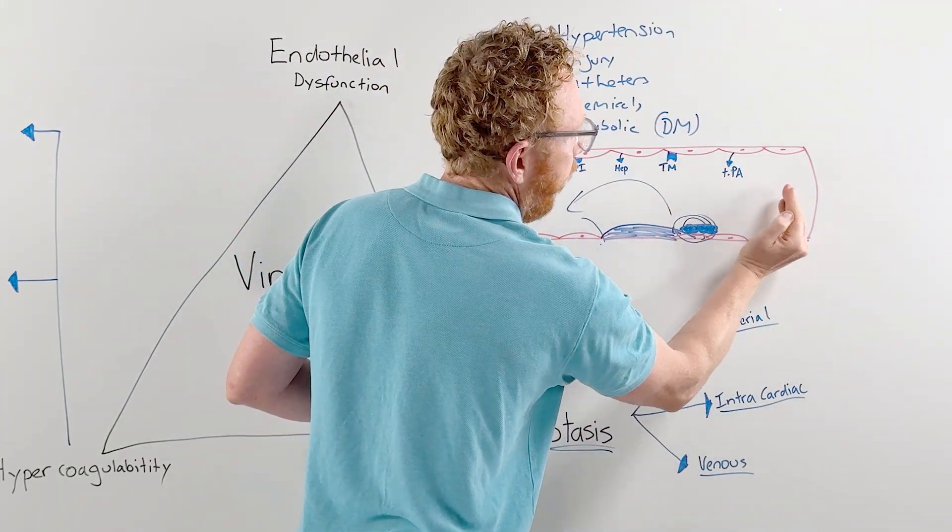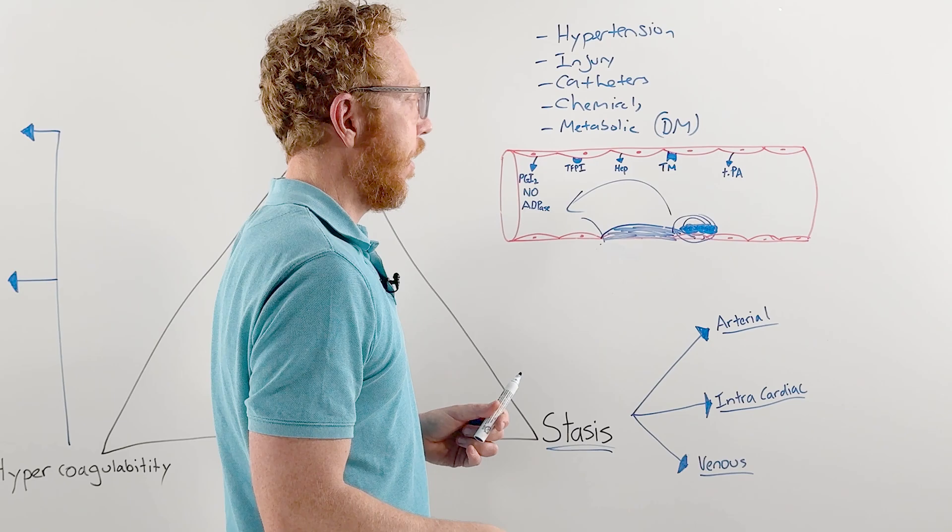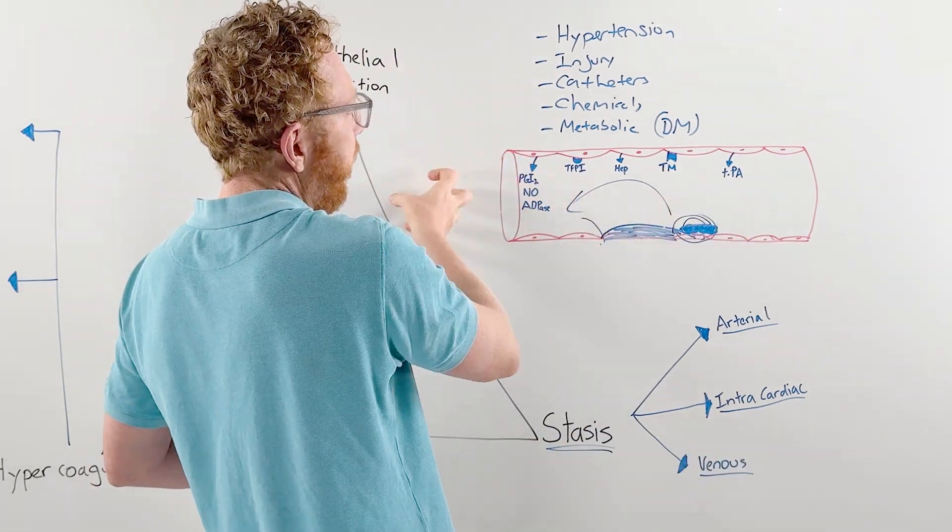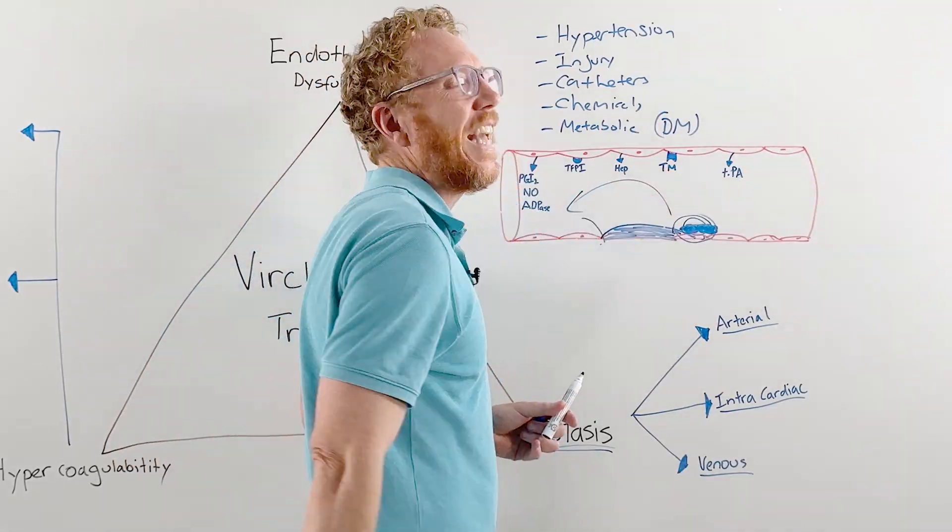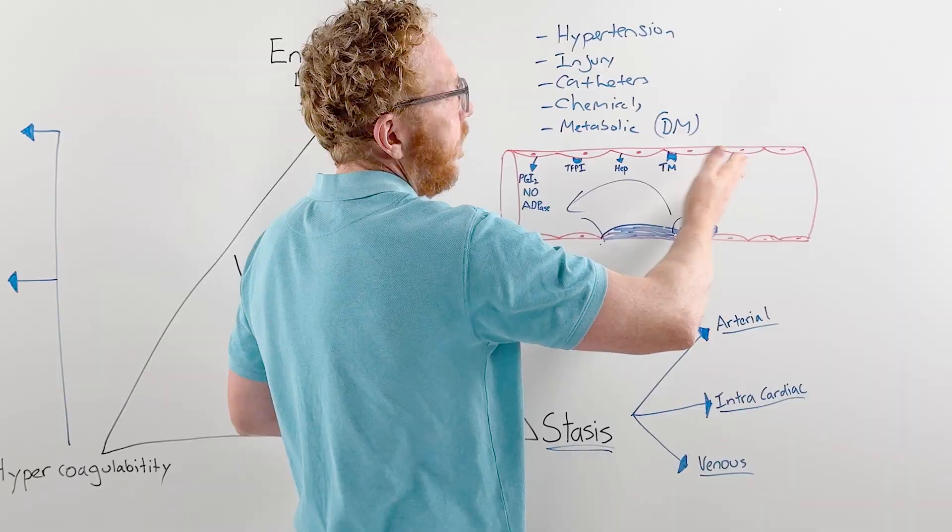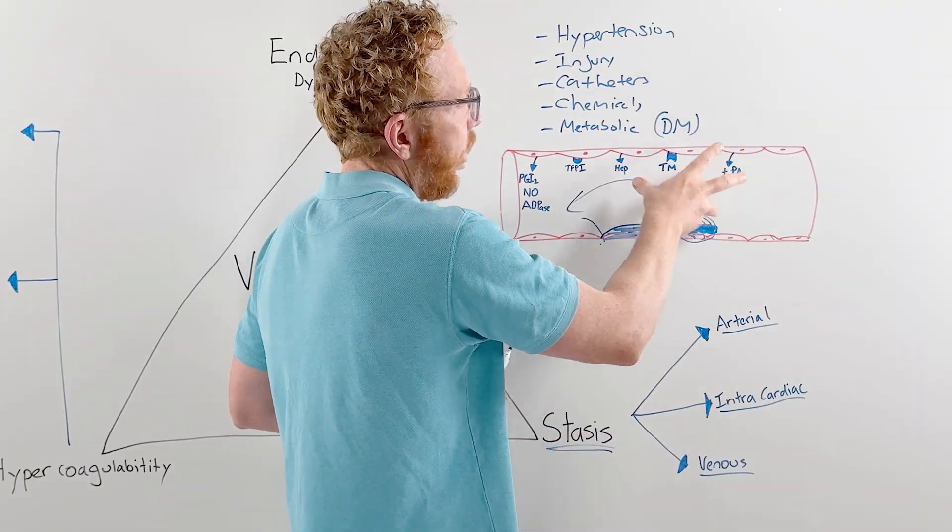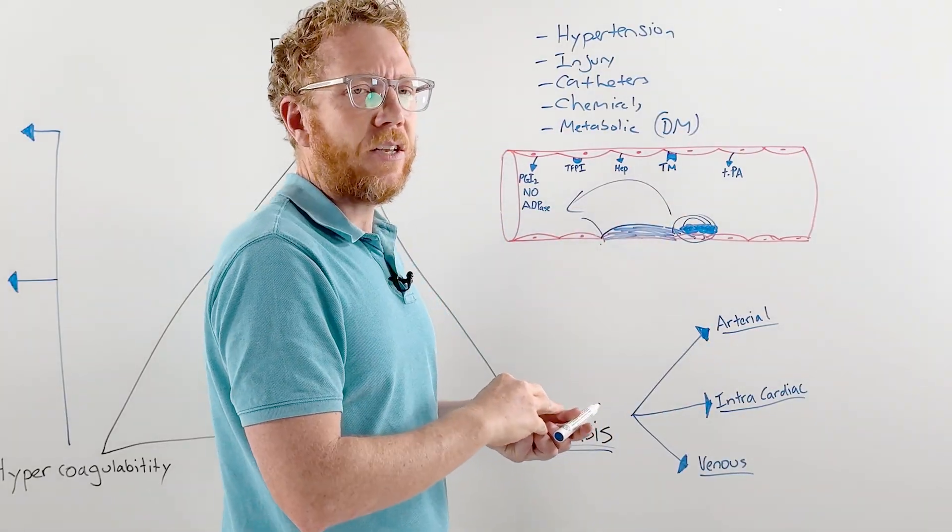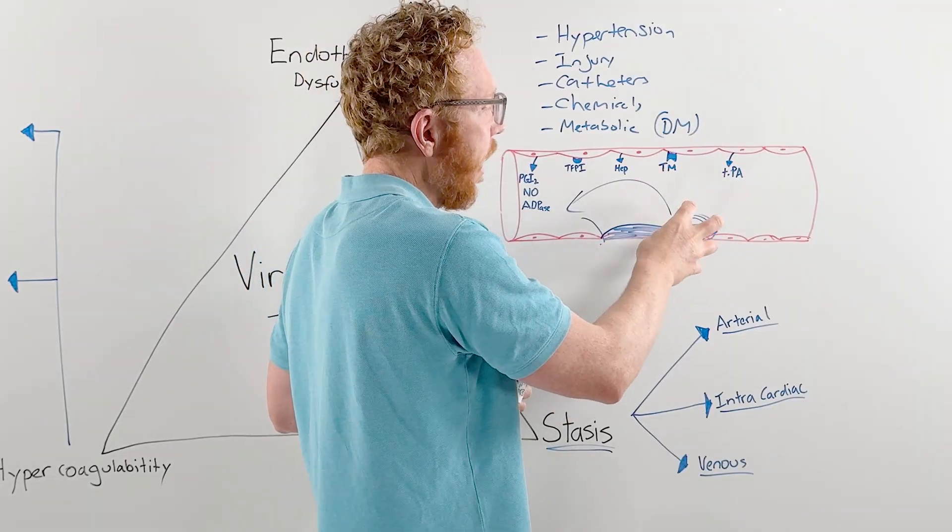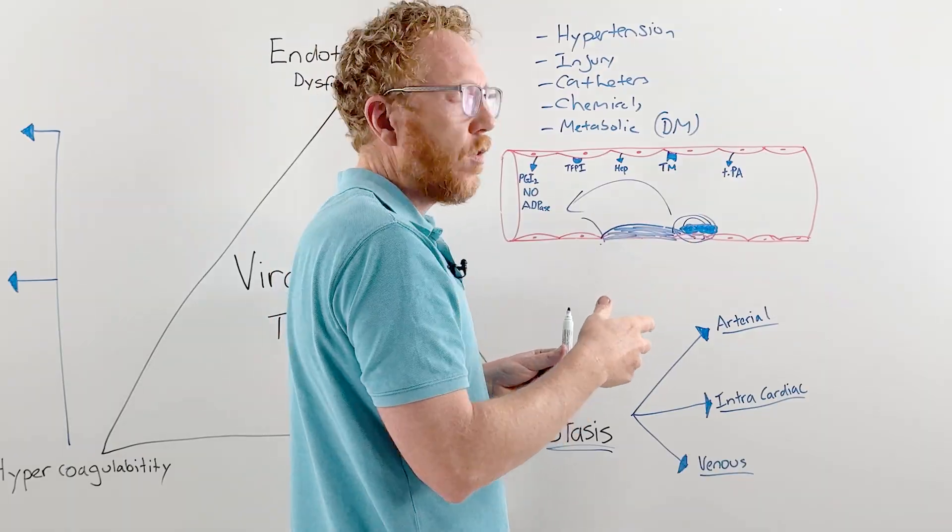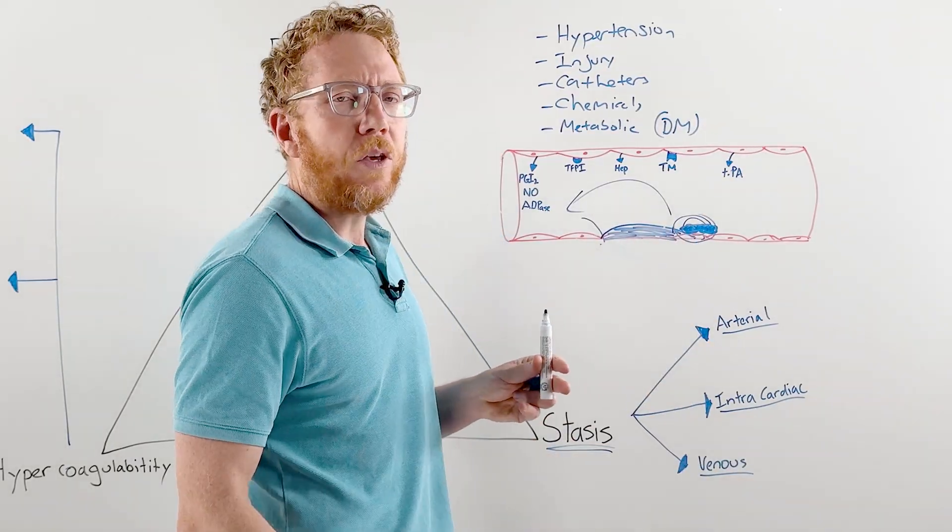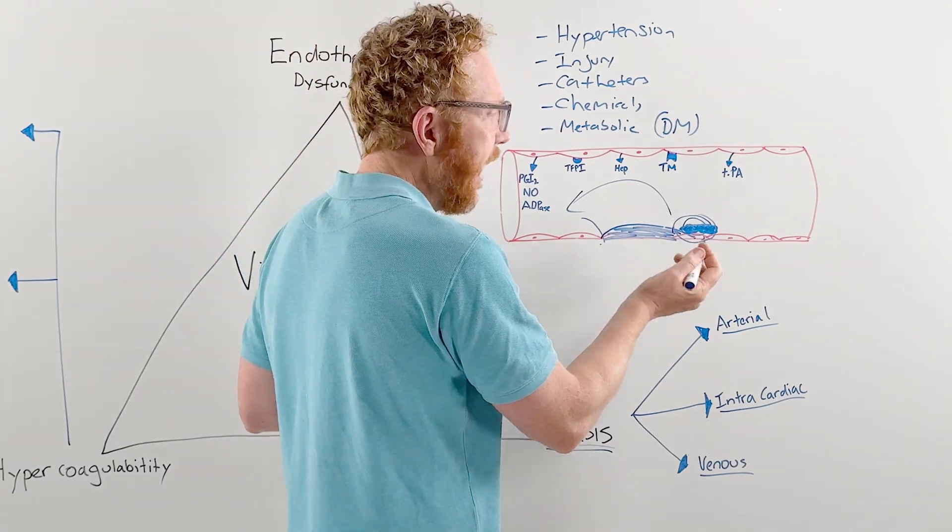This allows the platelet plug to start forming at the front end of an atherosclerotic plaque. So platelet formation happens at the front in the arterial system. If this is the flow, it starts to grow at the front side of the plaque, which is actually the opposite in venous. A venous clot will grow with the blood flow, whereas an arterial will grow against the blood flow.